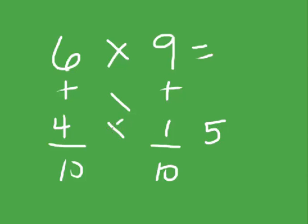And then we're going to have 4 times 1 equals 4. Actually, not as tricky as we thought it would be. So 54.